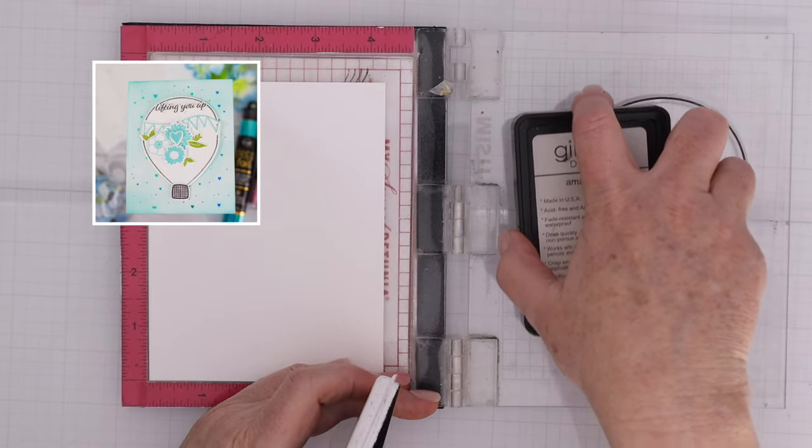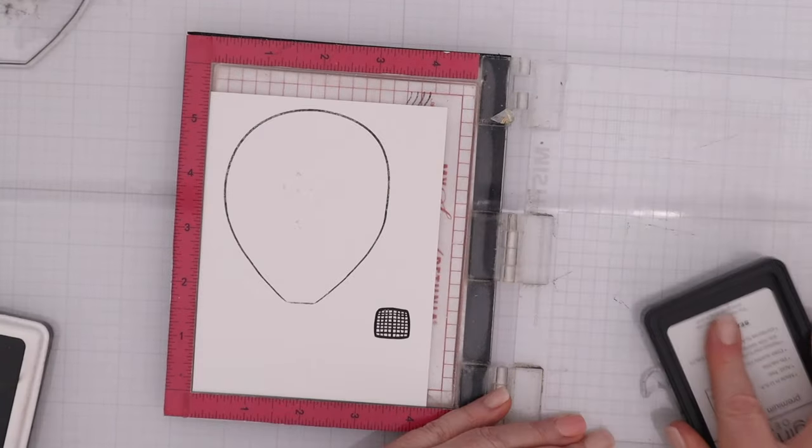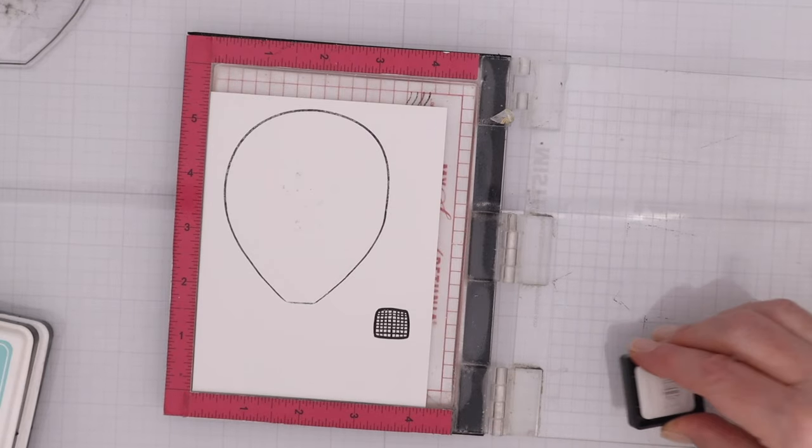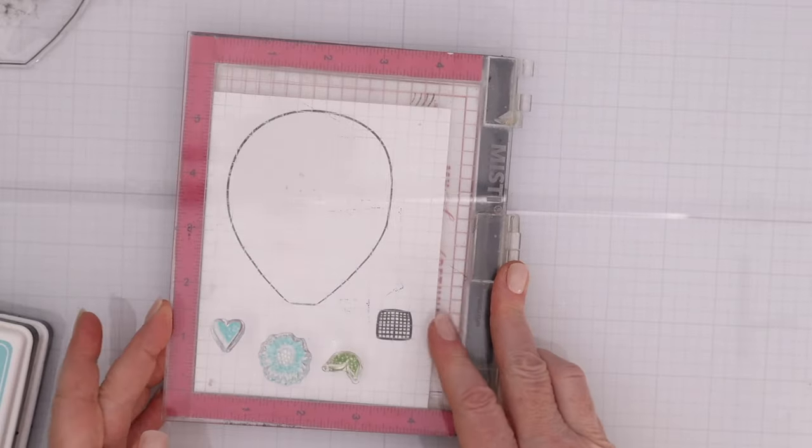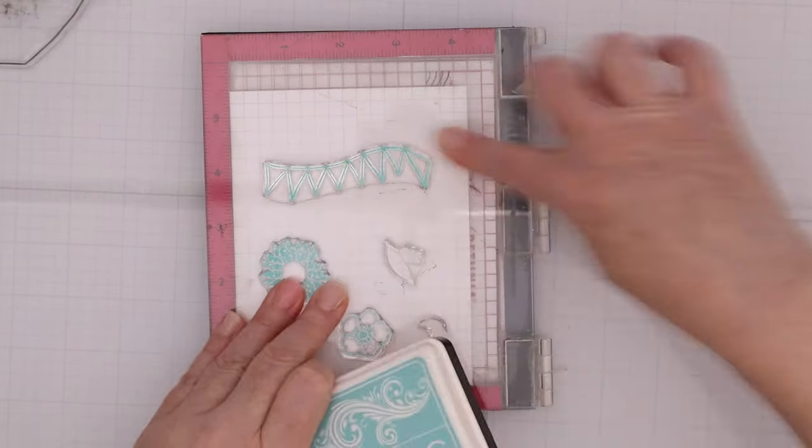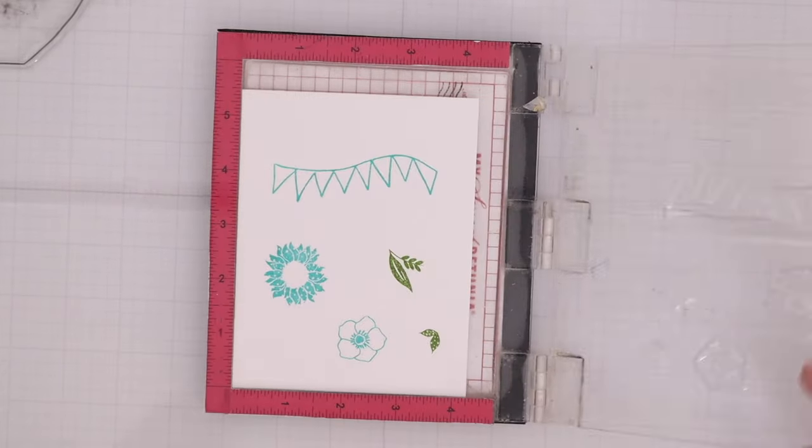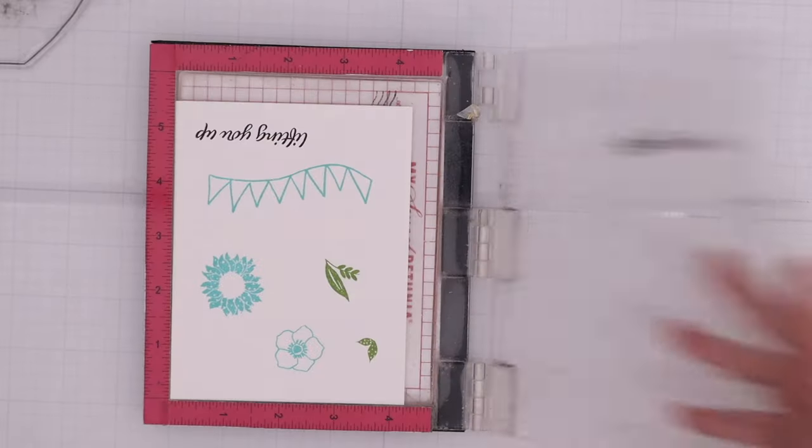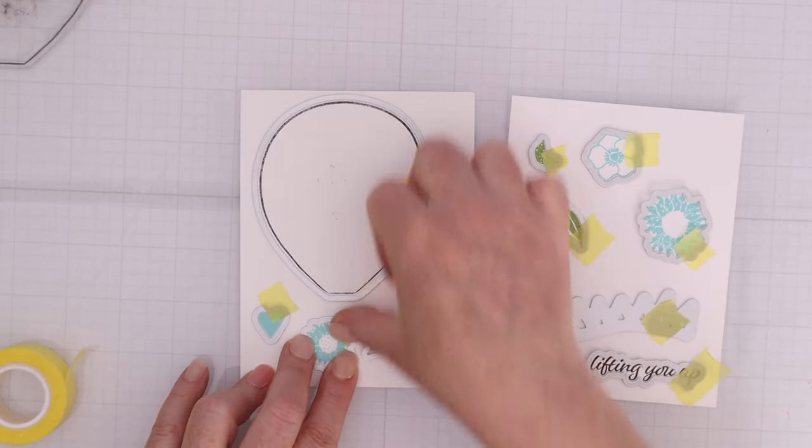Now let's combine those foiled elements with the stamps and dies to make some cards. I have the hot air balloon from the stamp set and the basket. I'm inking that up with Gina K amalgam ink and then I have a couple of Gina K ink cubes and other ink pads to stamp some of those floral images, the leaves, and the banner as well so that I have a bunch of different elements that I can use. I've stamped a sentiment that says lifting you up and that is also in the Gina K amalgam black obsidian.